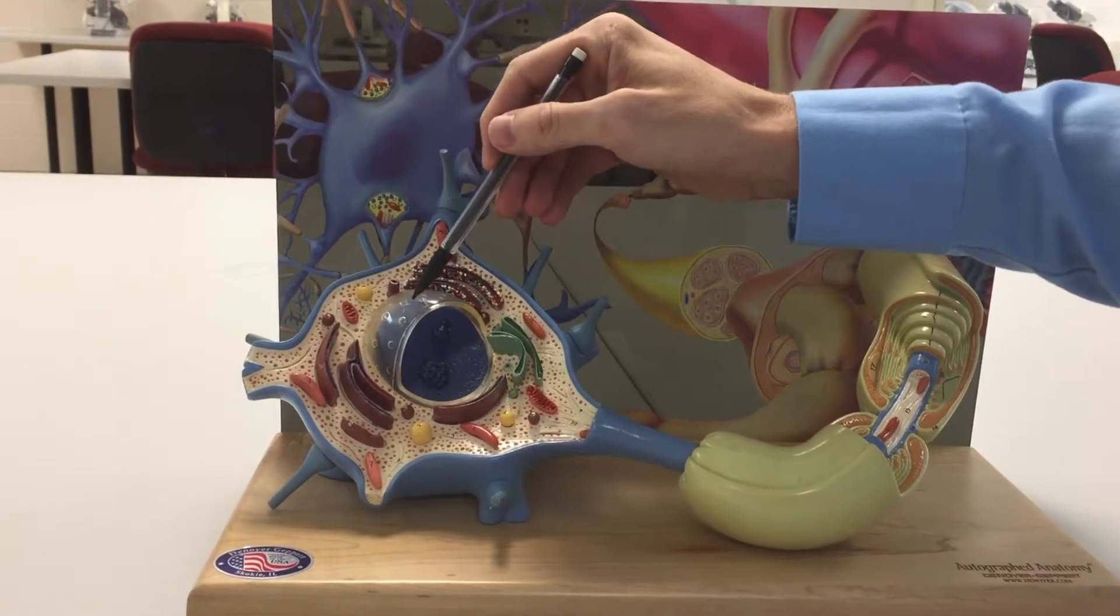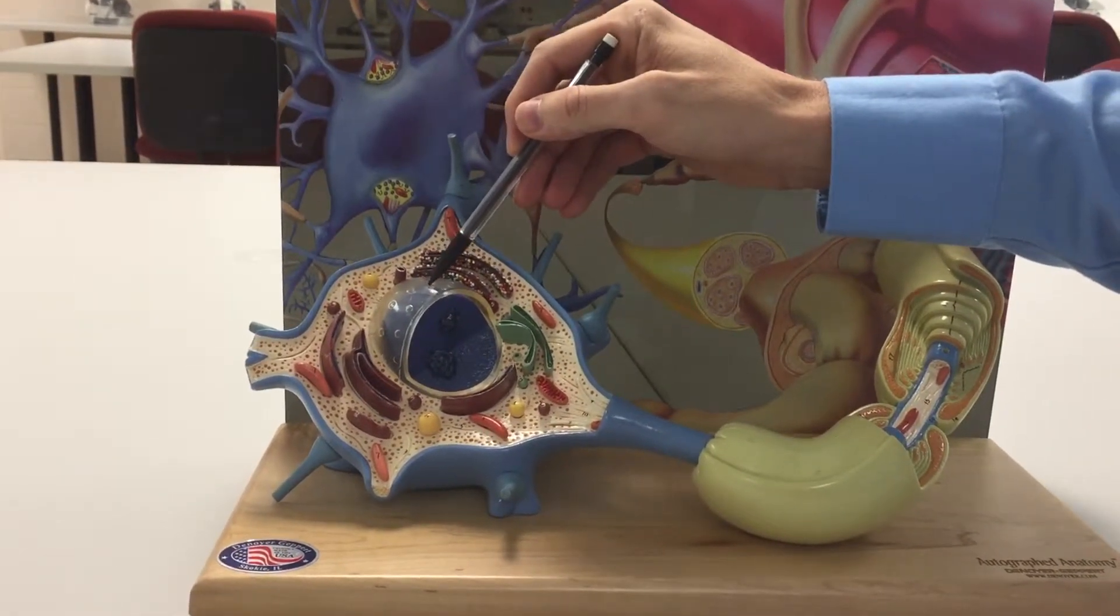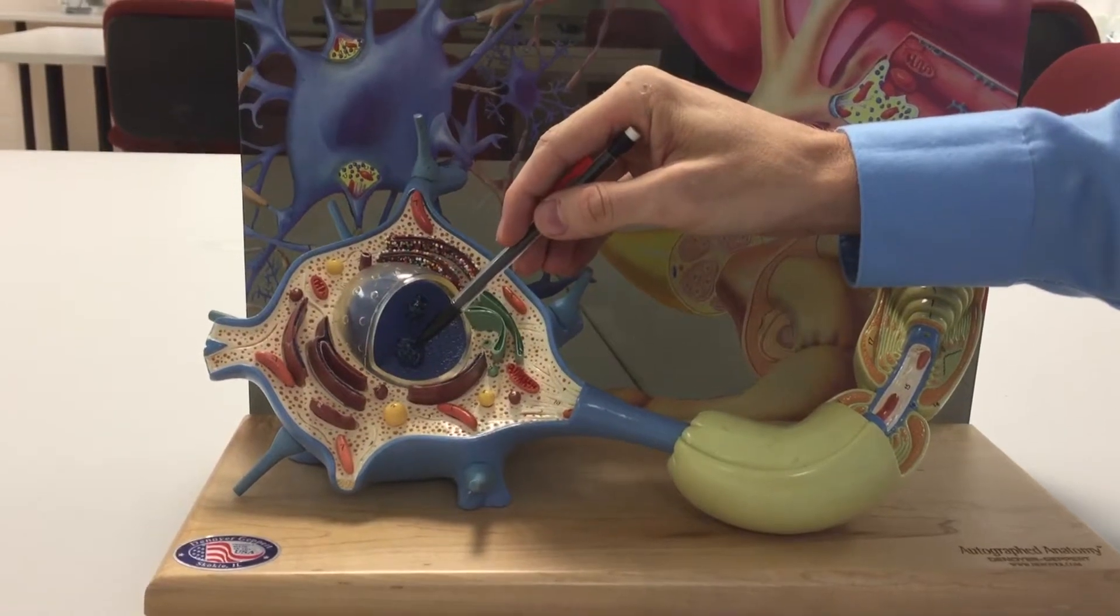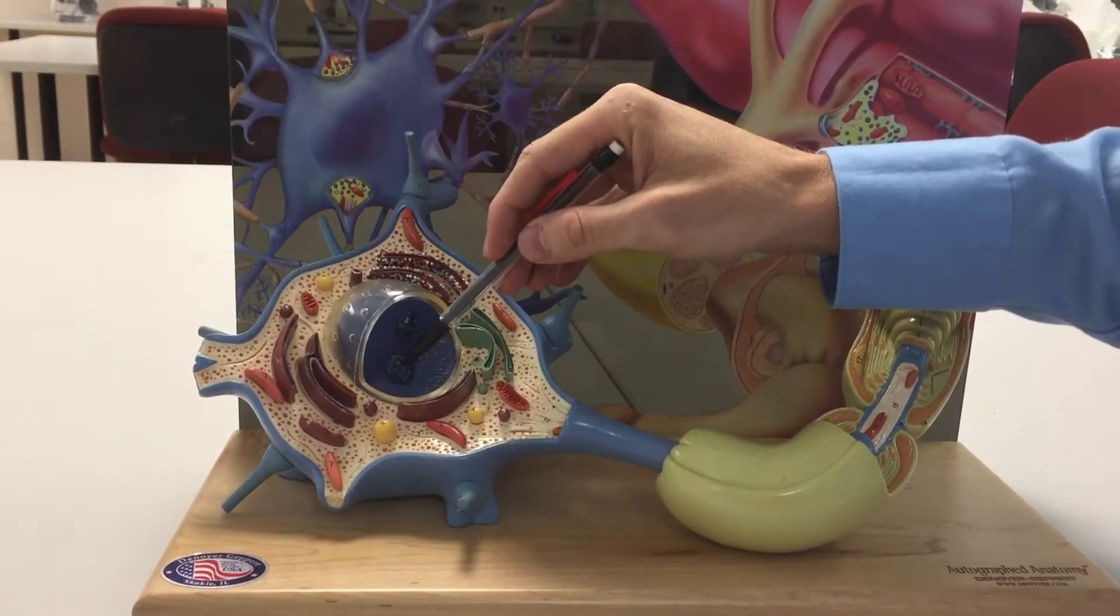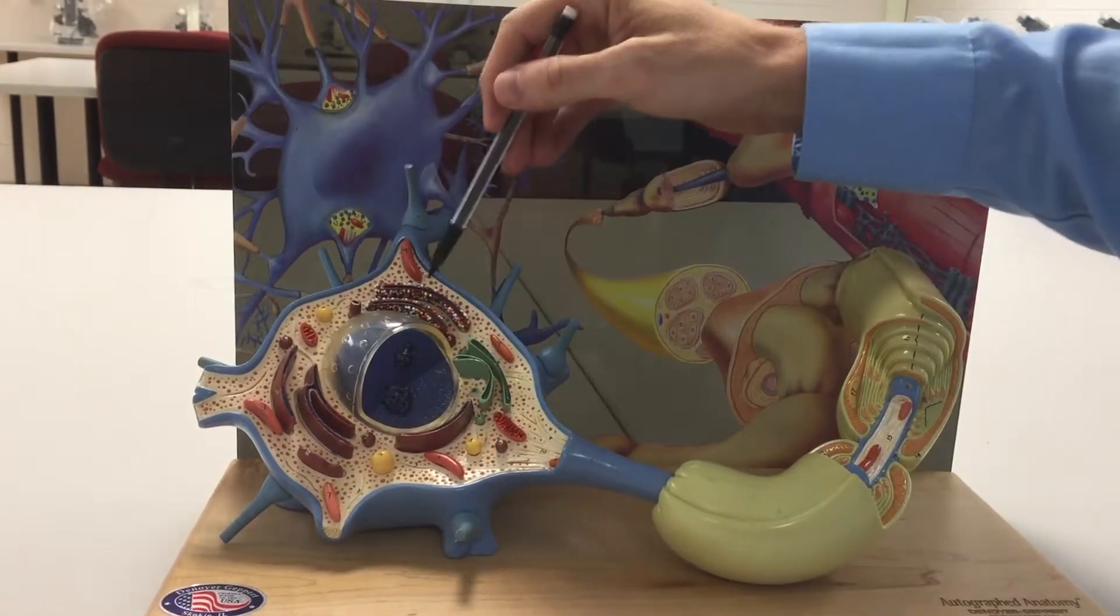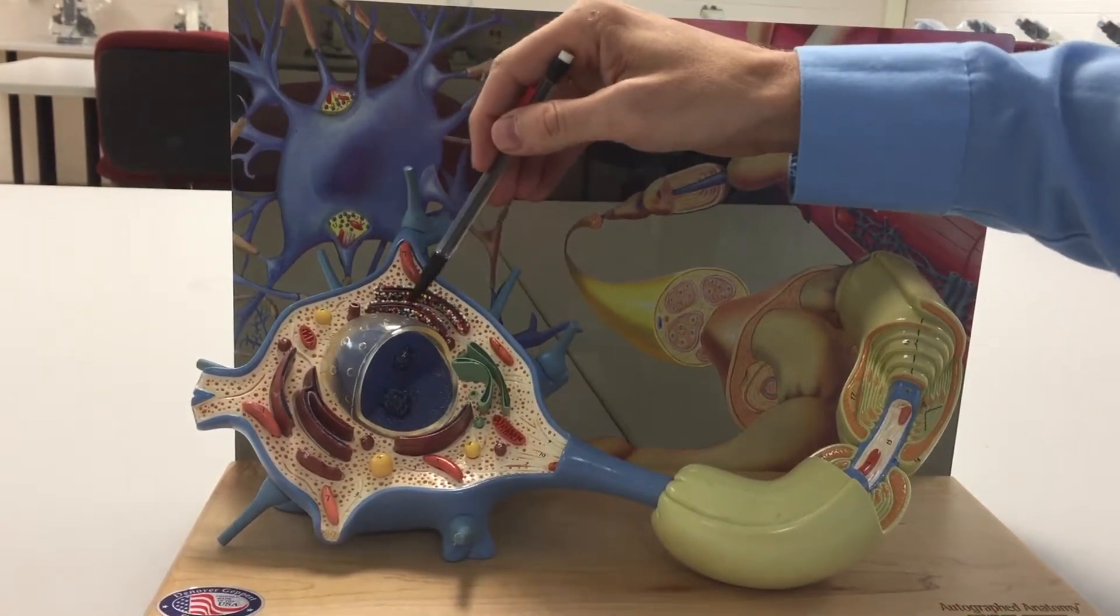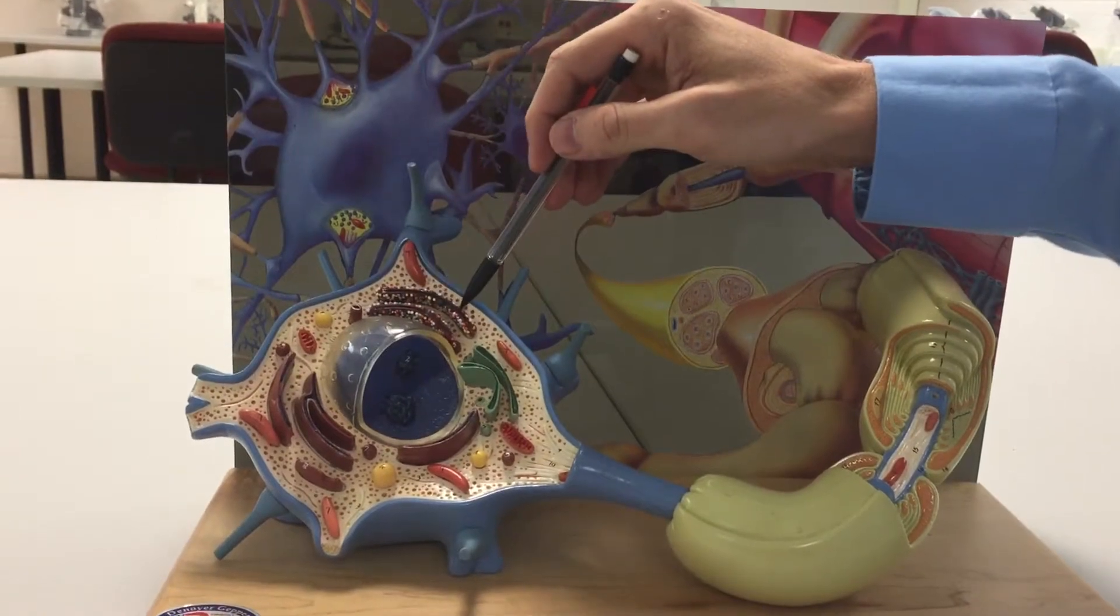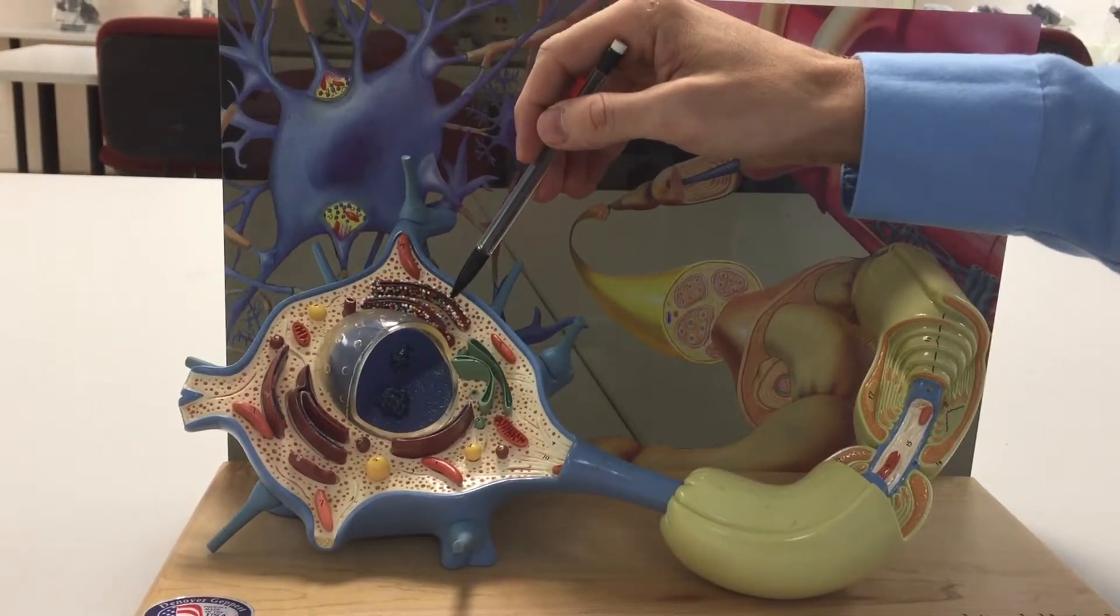This structure is the nucleus of the neuron. This structure here which is a little bit darker and smaller within the nucleus is called the nucleolus. This brown structure here that has the colored sprinkles on it is called the Nissel body.